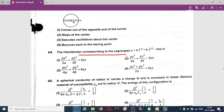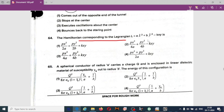Hamiltonian corresponding to the Lagrangian: this question has been asked frequently in many of the competitive exams. If you solve this Lagrangian, the Hamiltonian is given by option three. In the next video I will solve in detail about this question paper.